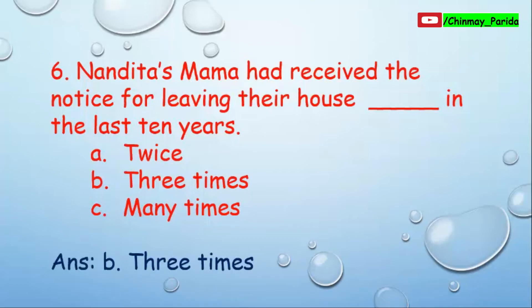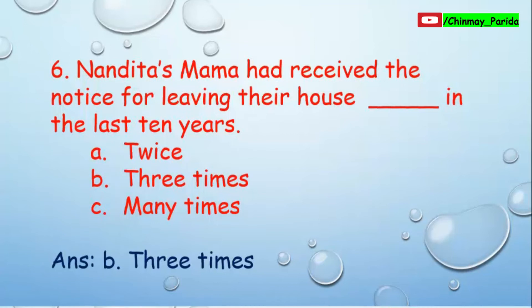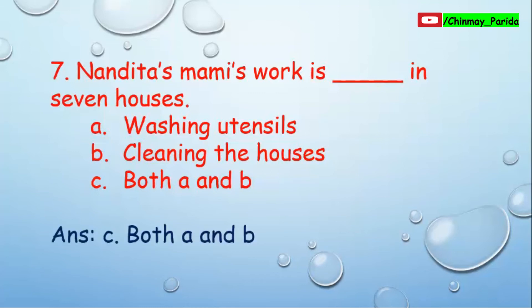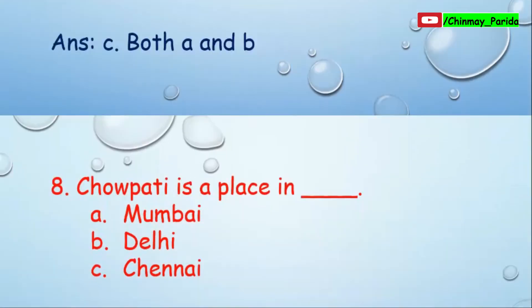Question number seven: Nandita's mommy's work is dash in seven houses. Option A: washing utensils. Option B: cleaning the houses. Option C: both A and B. Washing utensils is correct and cleaning the houses is correct, so we choose option C — both A and B. Nandita's mommy's work is washing utensils and cleaning the houses in seven houses.